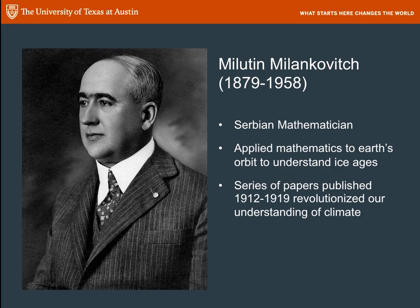Milutin Milankovitch was a Serbian mathematician, born in what is now Croatia, and he spent most of his career as a professor in Belgrade. In 1912 to 1919, he published a series of papers about the mathematics of the Earth's orbit and how orbital variations would affect solar insolation and therefore Earth's climate.